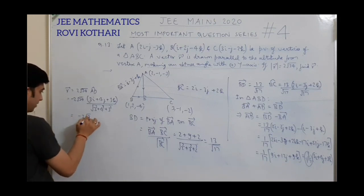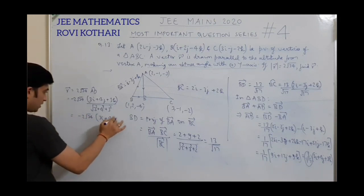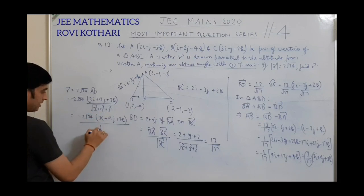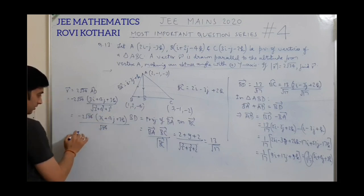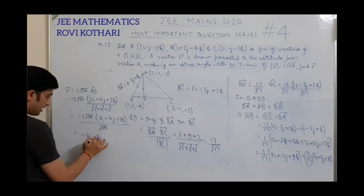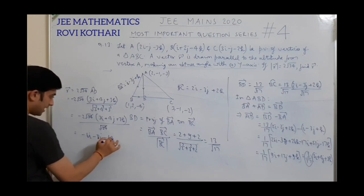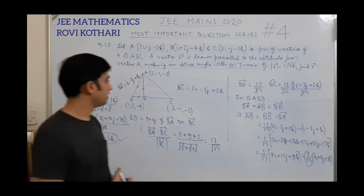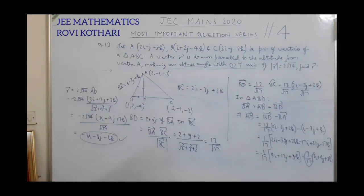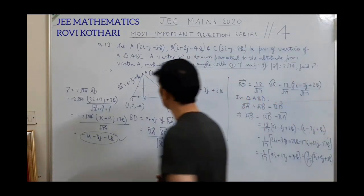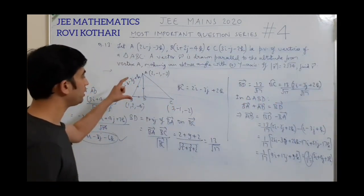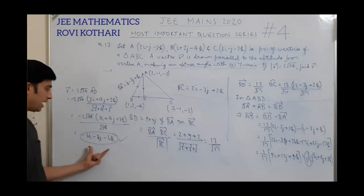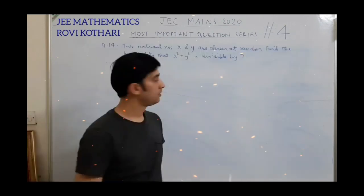Simplifying: this is minus 2√34 times (3i + 4j + 3k) divided by √34. Since √34 cancels with √34, the answer comes out to be minus 6i minus 8j minus 6k. This is vector R. It's a lengthy but very good question based on writing a vector parallel to the altitude in a triangle. The answer is R = −6i − 8j − 6k.